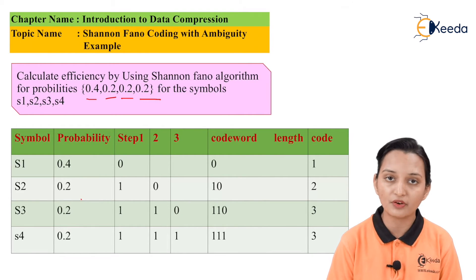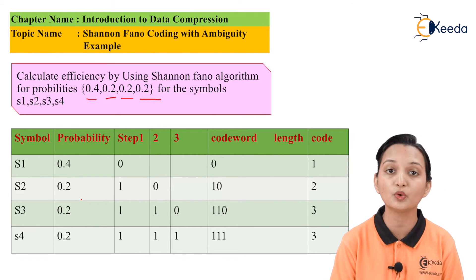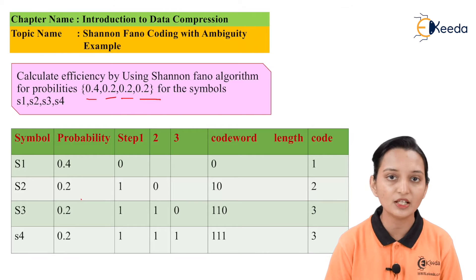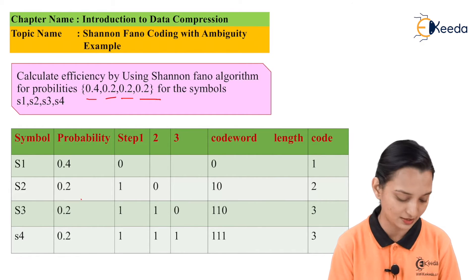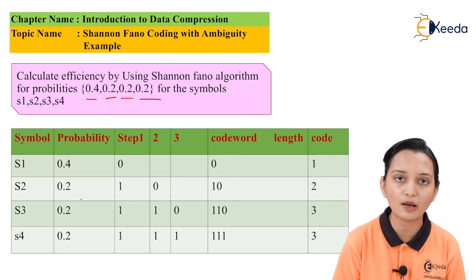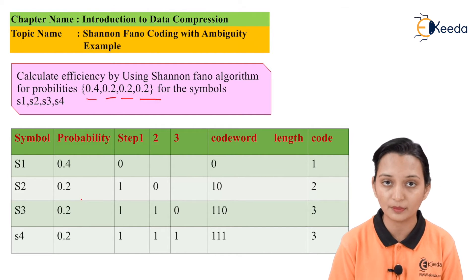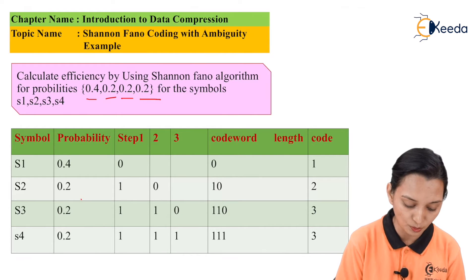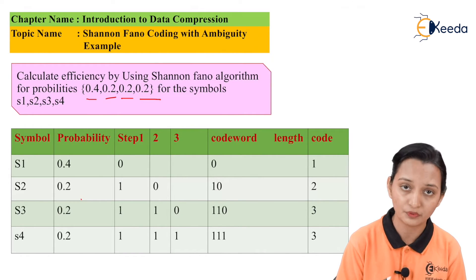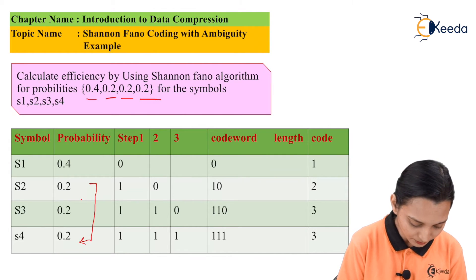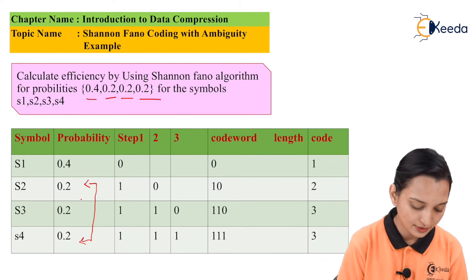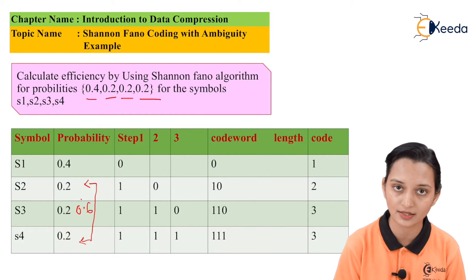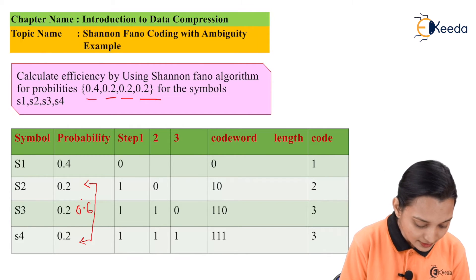We need to divide the probability column into two parts such that they provide the most probably equal sums. The maximum probability is 0.4. Let us check whether we can achieve 0.4 with the remaining probabilities. The remaining are 0.2, 0.2, 0.2. One way is to assign the last three probabilities as one part — their sum is 0.6 — and the first probability alone as the other part with sum 0.4.